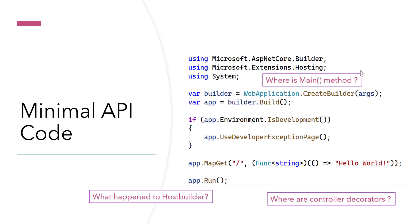The host builder has a new change where you can directly call the create builder method and start working with it. The controller class that was missing from the scaffolded project template — when you choose the empty project type — the slash route actually acts as a controller decorator for you. That's another great thing about this particular code.